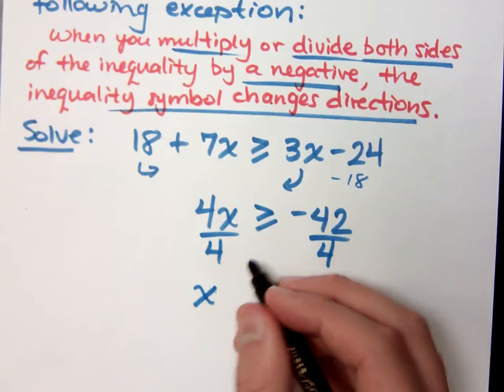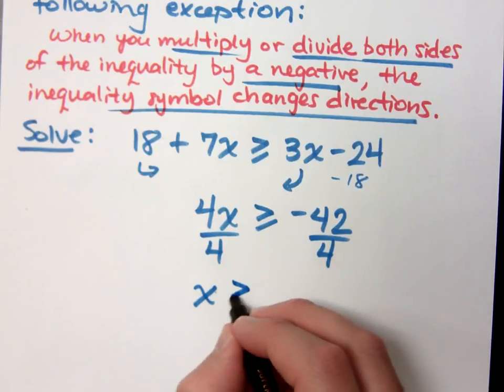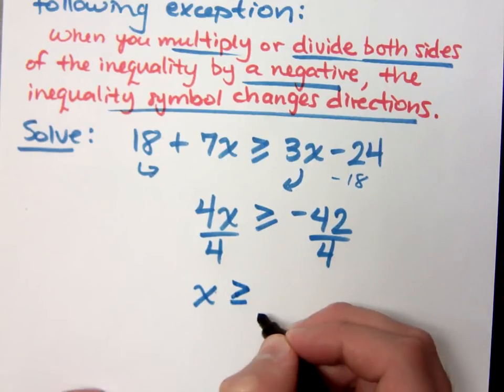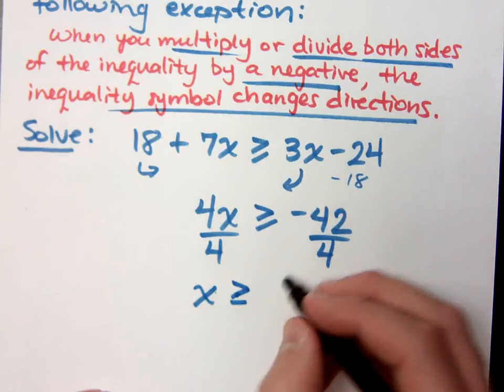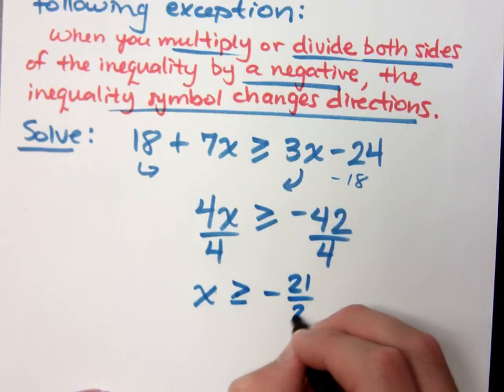I'm dividing by a positive 4 so the inequality symbol stays the same as x is greater than or equal to. And we just need to reduce this. This guy reduces to negative 21 over 2.